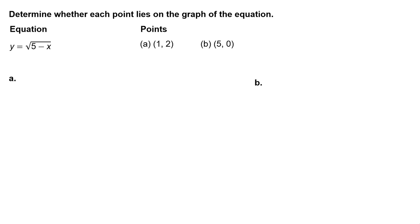Determine whether each point lies on the graph of the equation y equals the square root of the quantity 5 minus x. Points: Part a, (1, 2). Part b, (5, 0).